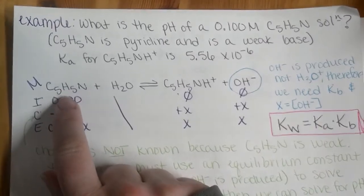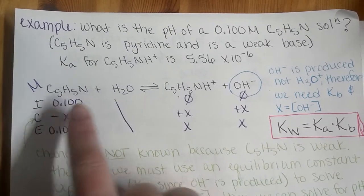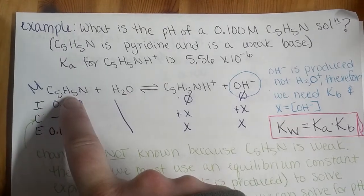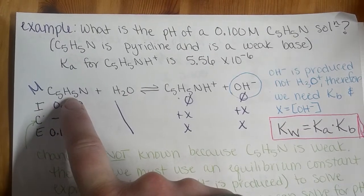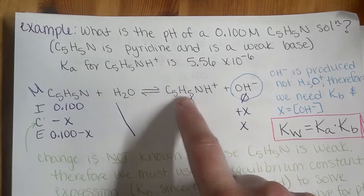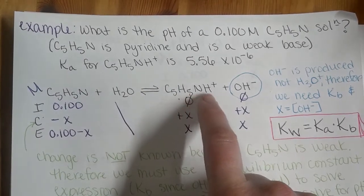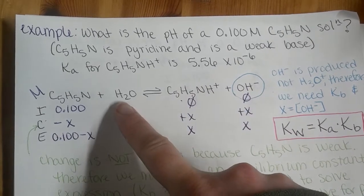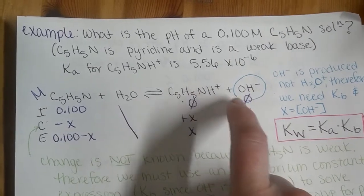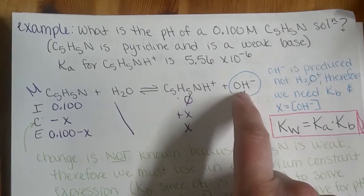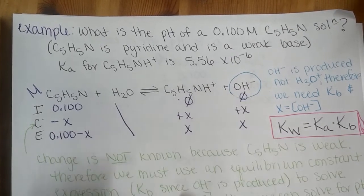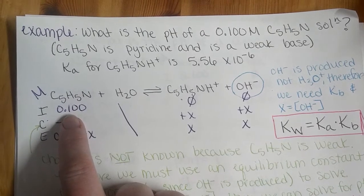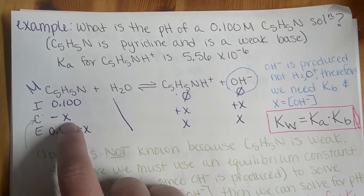All right, so setting up our ICE table, we have our pyridine interacting with water, and we're told that this is going to be a base, so it's going to accept a proton to form C5H5NH+. And because water is donating a proton to our pyridine molecule, we're going to end up with the hydroxide ion. We put our initial concentration of our pyridine, 0.100, that's going to change by X.